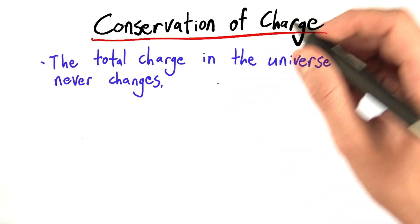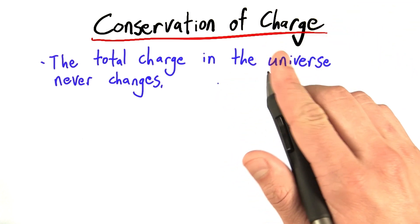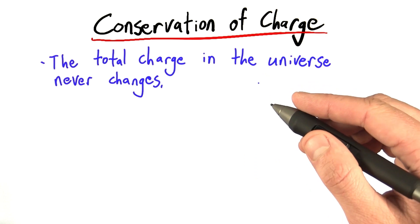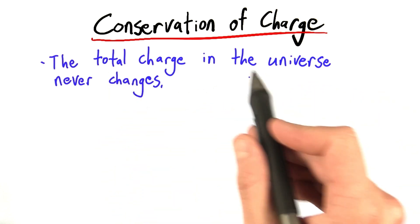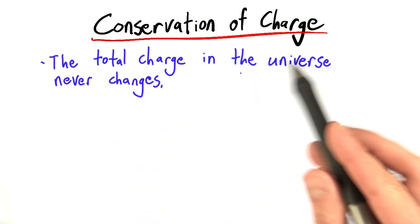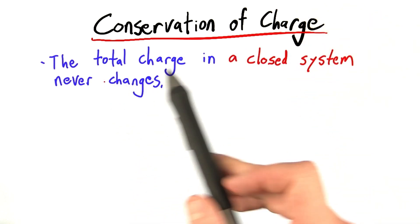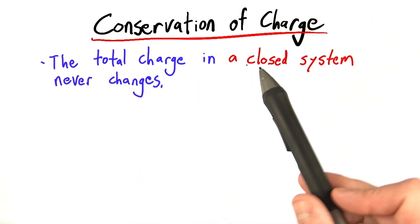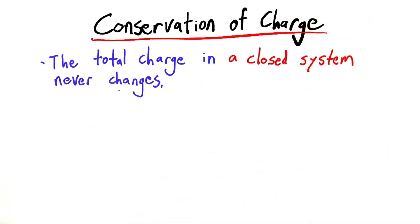It just means that when we do create a positive charge, we better create a negative charge to go along with it. In fact, we can refine this definition and make it a little more specific: the total charge in a closed system never changes.